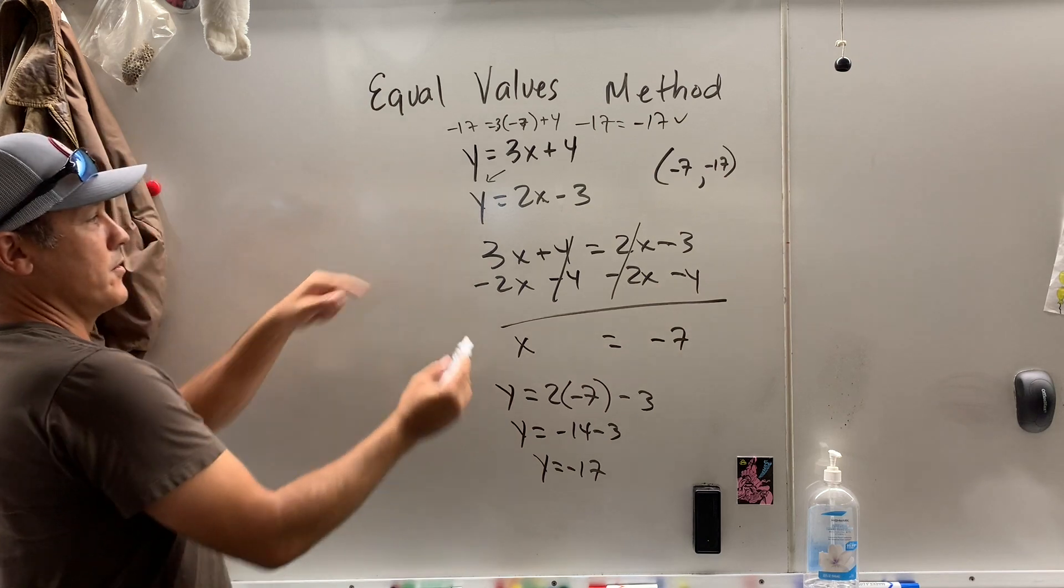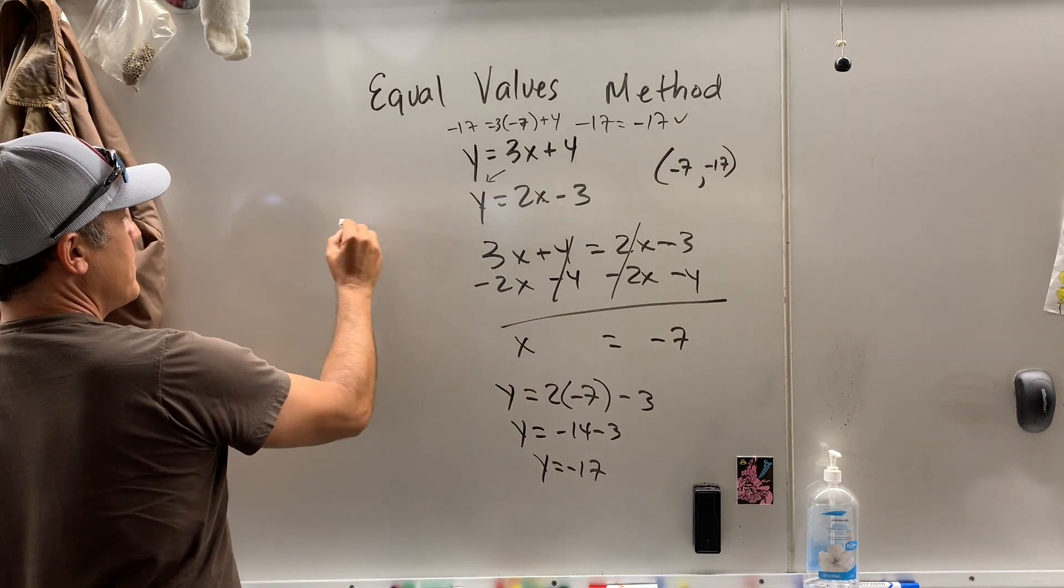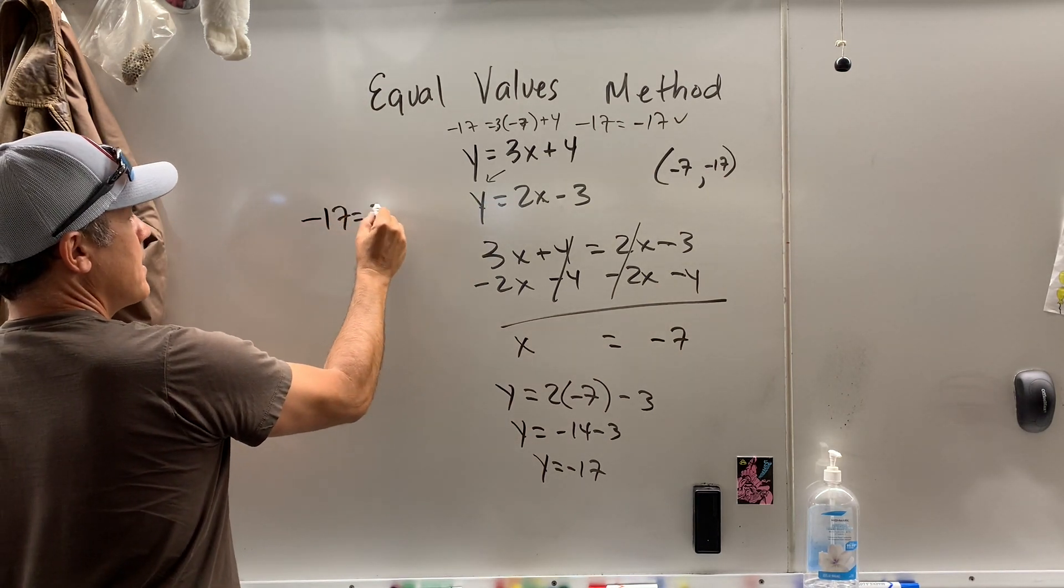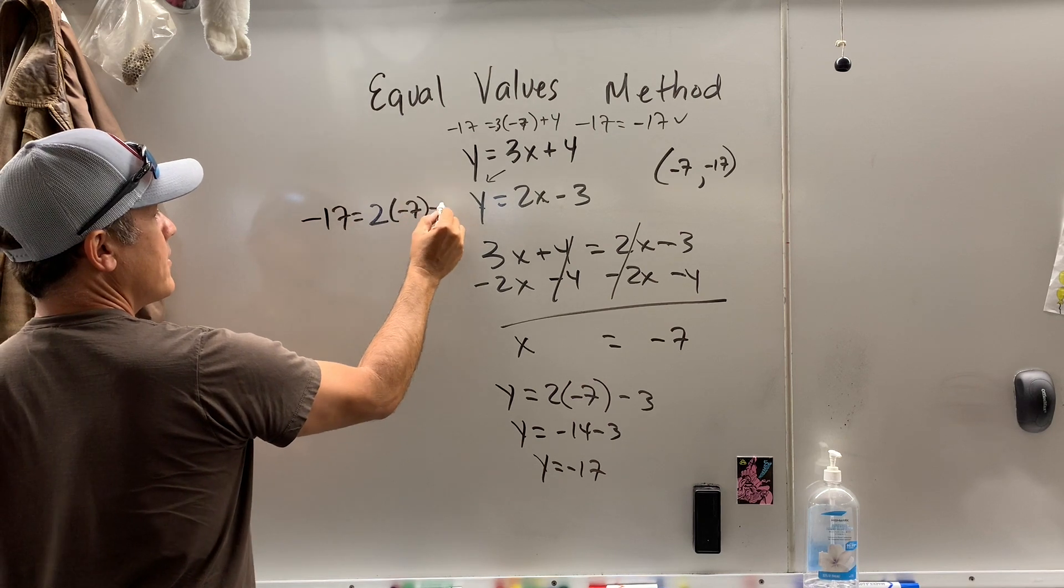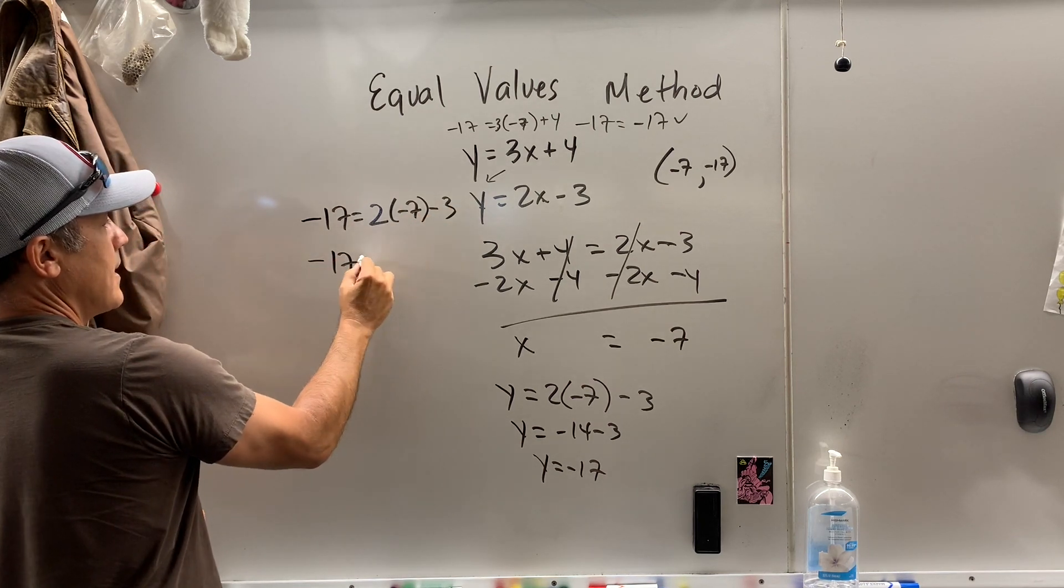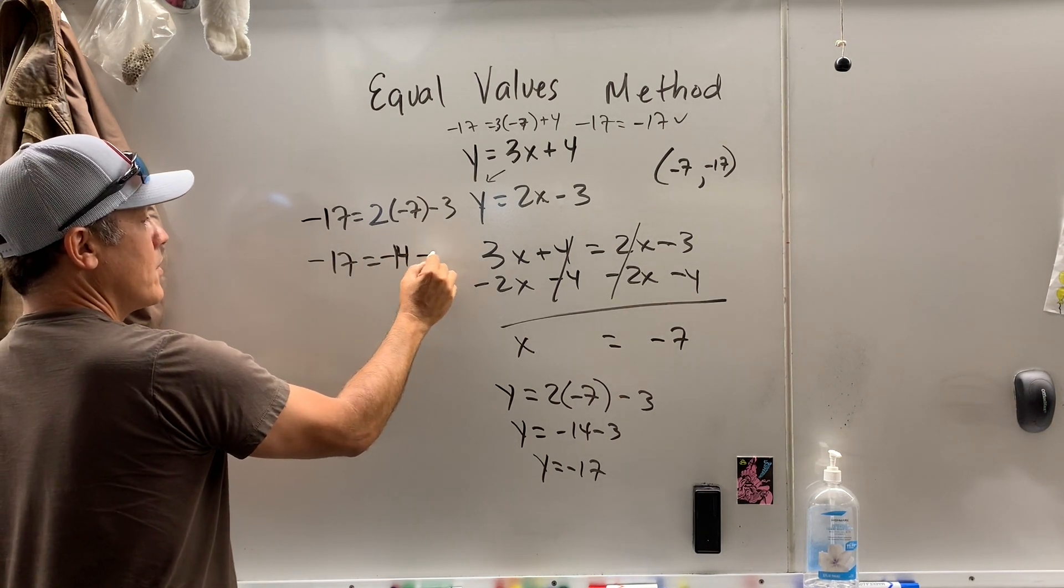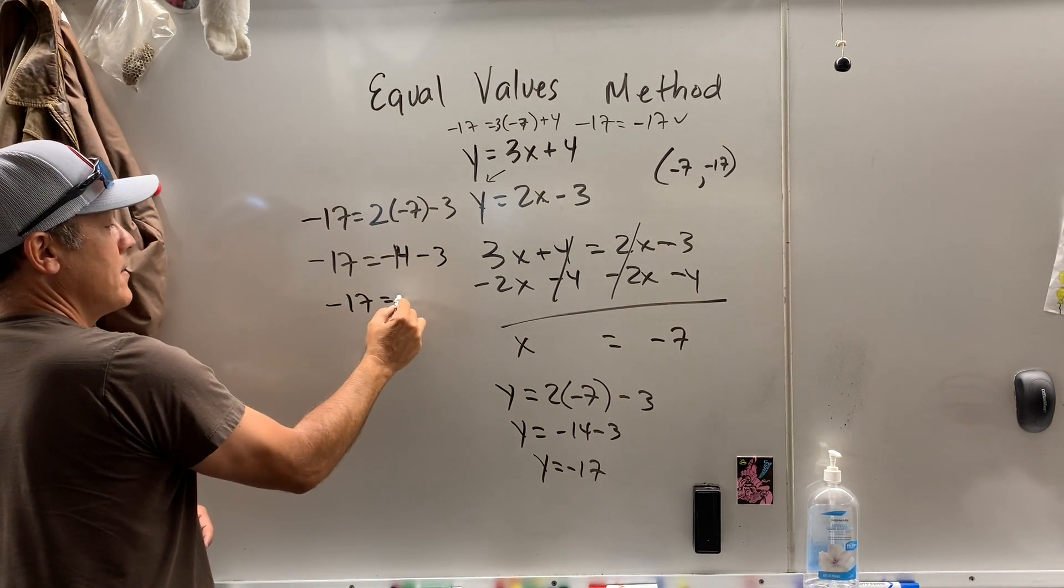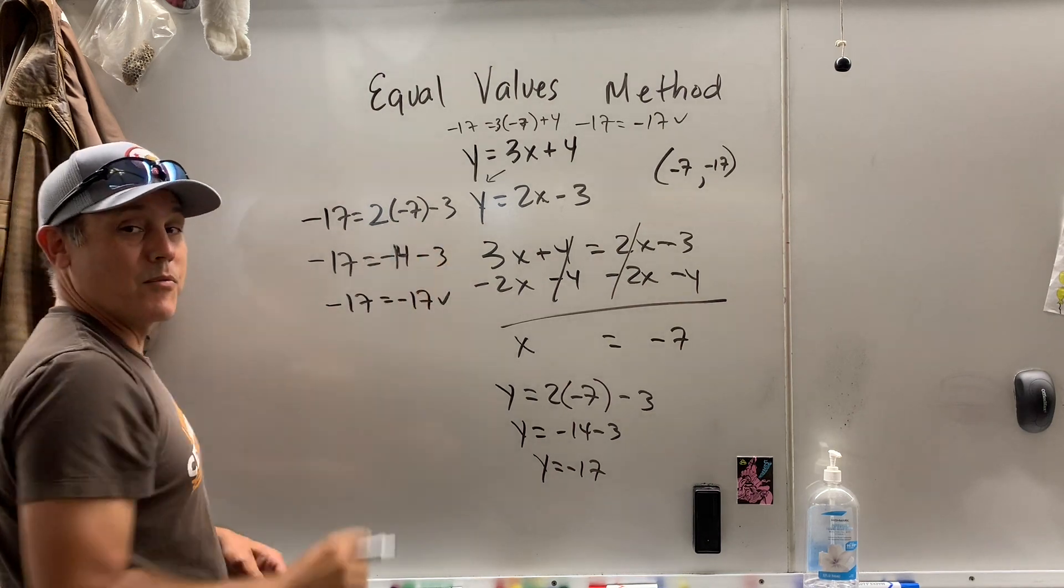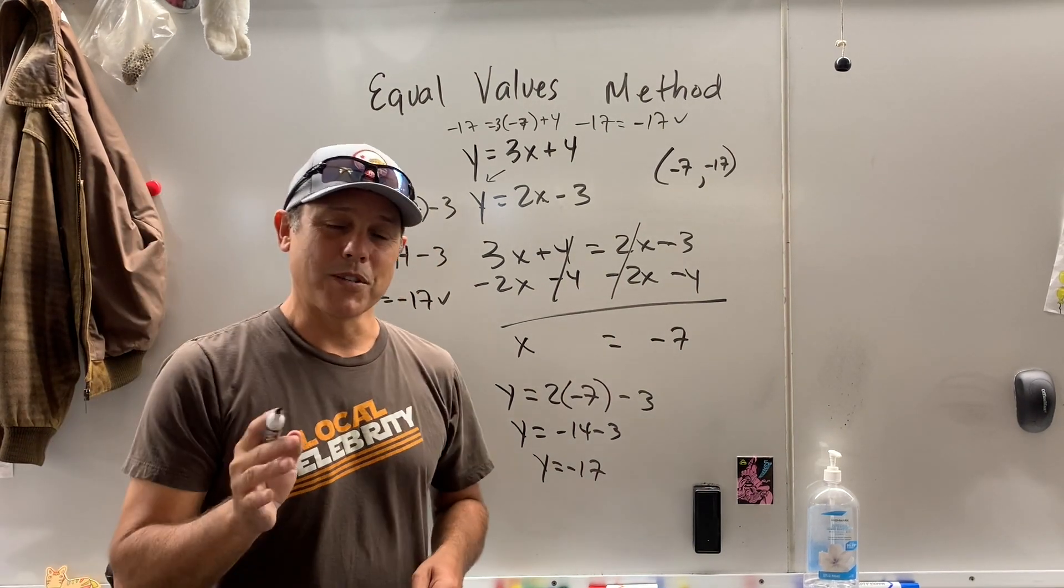Let's check this one. I'll leave myself a little more room. y is negative 17. Does it equal 2 times negative 7, take away 3? Negative 17 equals, that's negative 14. Negative 14, take away 3. Negative 17 equals negative 17. Now we know we are 100% correct.